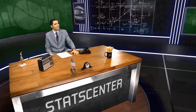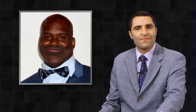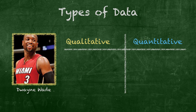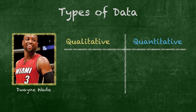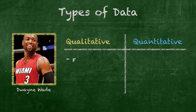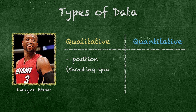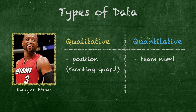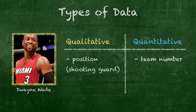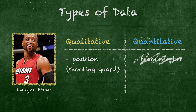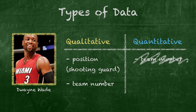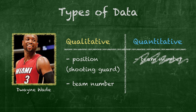Sounds a bit tricky. No trickier than the pattern in your tie. Let's look at some more examples. Take my boy D-Wade. Wade plays shooting guard — so that's a qualitative variable. He wears the number three. Quantitative? Hold up — three may be a number, but it's a qualitative value because it's only being used to identify the player.